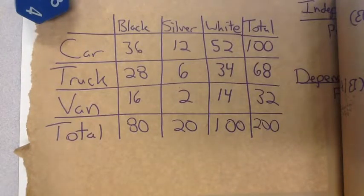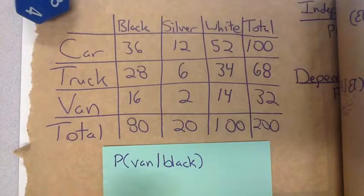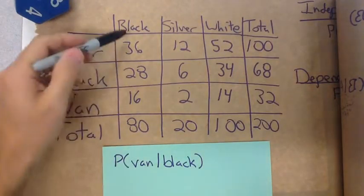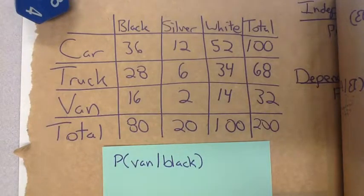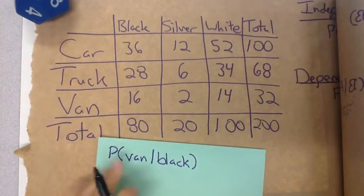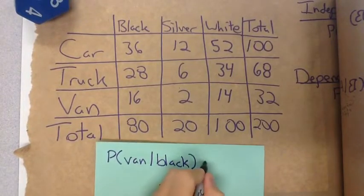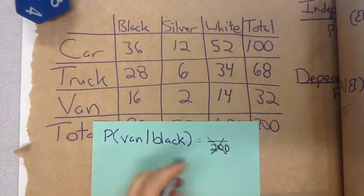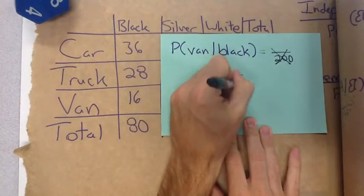First one we're going to see is the probability of if we have a van given that it's black. This is different than saying van and black, because van and black would have been right here - 16 out of the 200. It's also different than saying van or black. If it was van or black, we would have taken this whole column, this whole row, and then 80 plus 32 minus the overlap of the 200. What we're looking at here is saying is it a van given that we have a black. So it has to be black vehicle, so it's not going to be out of 200 this time. Instead of the 200, because it's not the total, our denominator is how many black vehicles there are. And if we cover this up, there's 80 total.